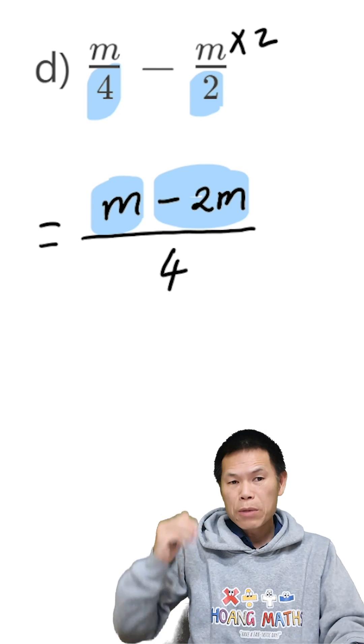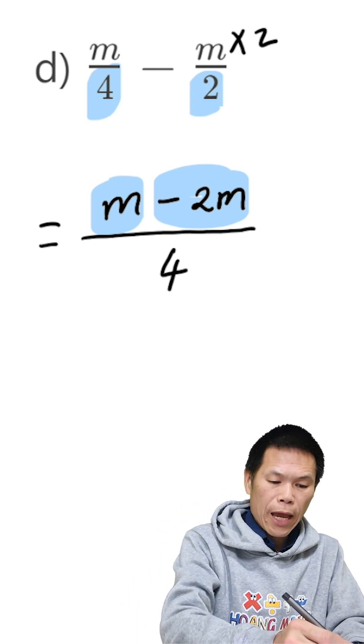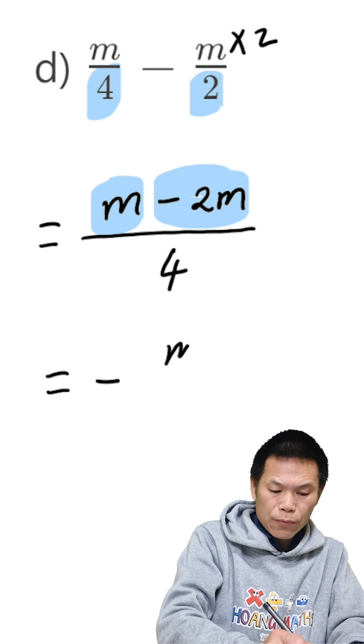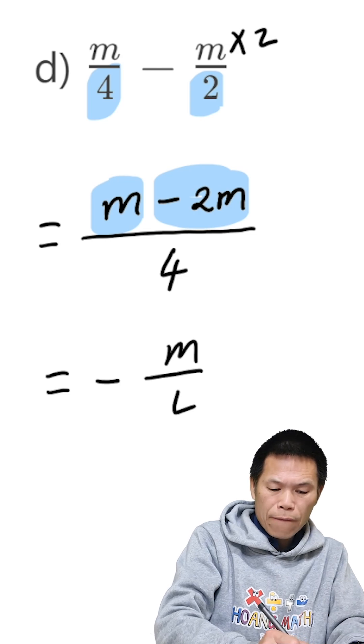1 minus 2 give me negative 1. Negative 1m. So the answer should be minus or negative m over 4.